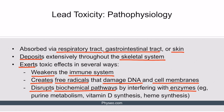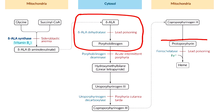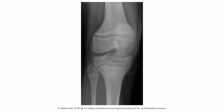Lead's interference with heme synthesis is frequently tested on the boards. Lead inhibits heme synthesis by interfering with two key enzymes, ALA dehydratase and ferrochelatase. Inhibition of these two enzymes leads to decreased production of heme, which leads to a type of microcytic anemia known as sideroblastic anemia.